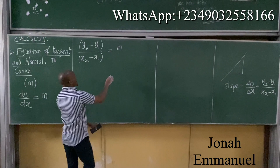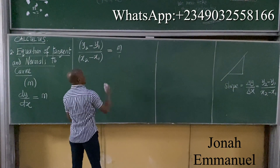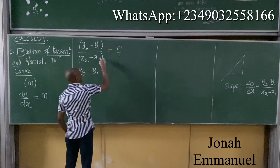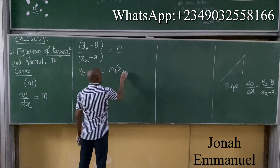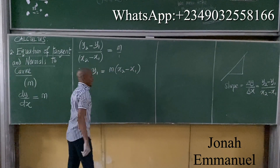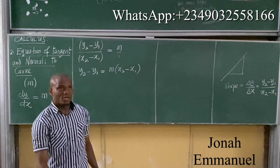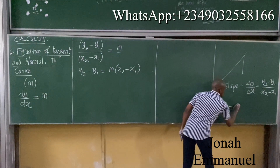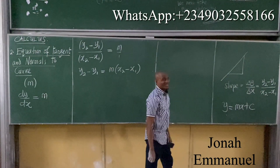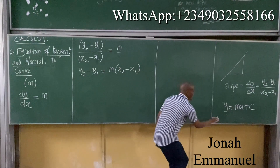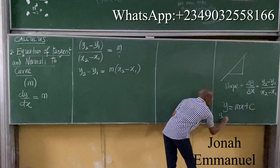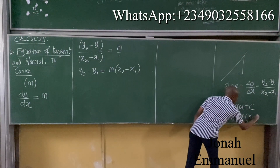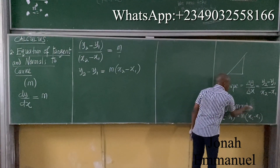From here, I can simply cross-multiply. This times one is exact, so Y2 minus Y1 is equal to M times (X2 minus X1). This is the equation of a straight line — you know it basically as Y = Mx + C. Here, where there are two Y values, it becomes Y2 minus Y1 equals M into (X2 minus X1).